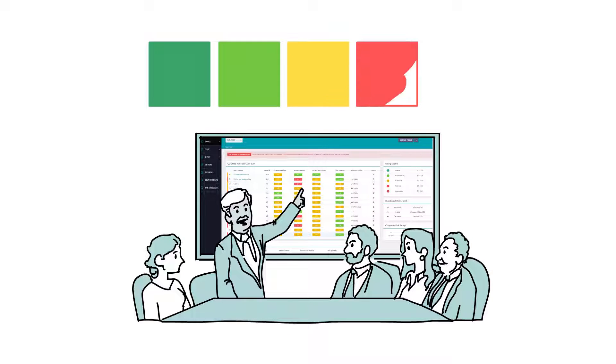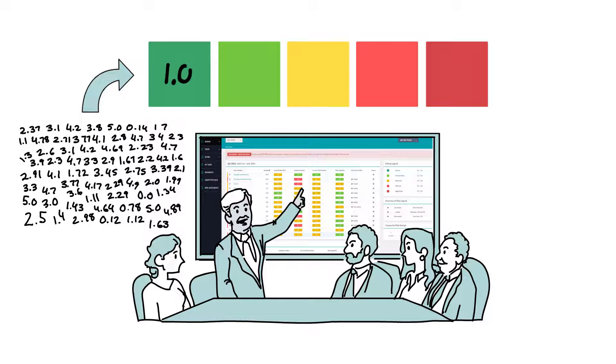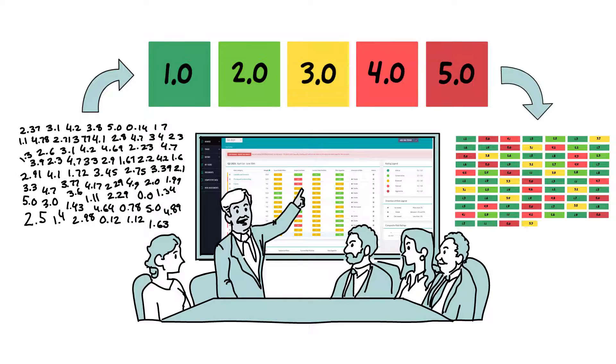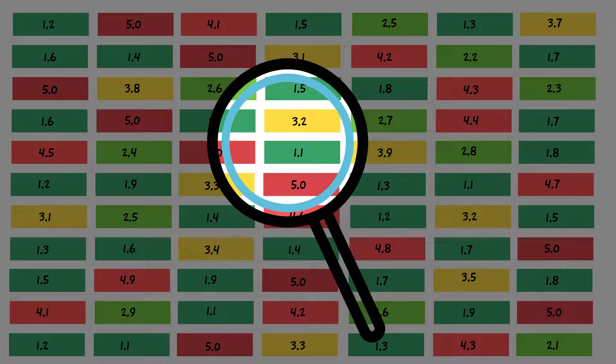With our patented weighting and aggregation system, Watchtower converts all values into a common five-point scale so you can get a normalized enterprise-wide view of your risk profile while staying in control of exactly how much detail you want to see.